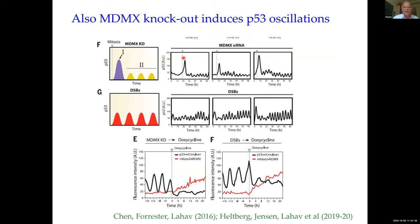I work quite closely with Galit Lahav's group and we also look at knockouts. If you knock out MDMX — another protein — you can also induce oscillations. So beyond double-strand breaks, you can also knock out genes in the network and induce oscillations in various ways, and we have a very recent paper modeling this.